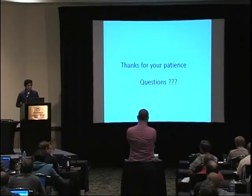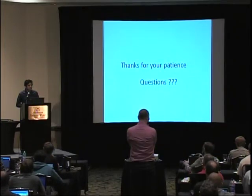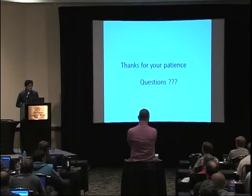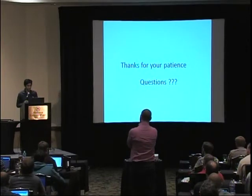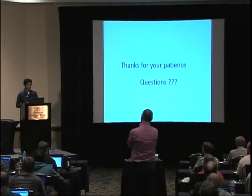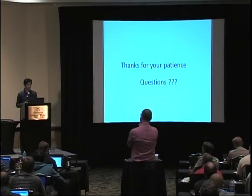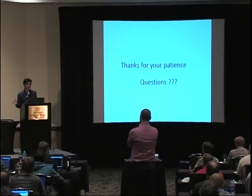Audience member: For the phase perturbations, are those randomly selected? Mohamed: Yes, each transmitter selects those perturbations randomly. For the plots shown, each transmitter generates perturbations from a uniform distribution with a range from minus 15 degrees to plus 15 degrees.